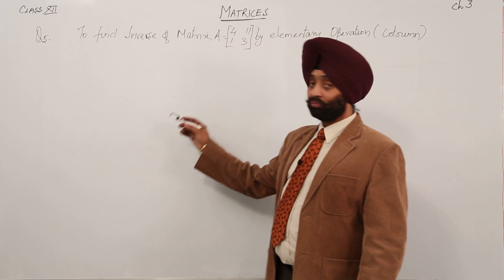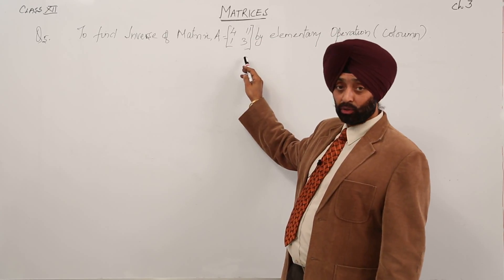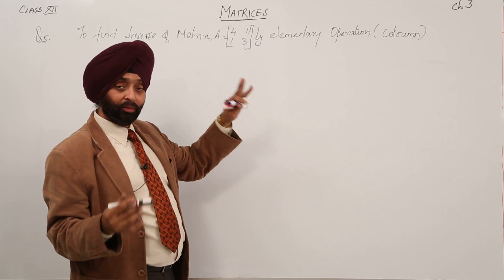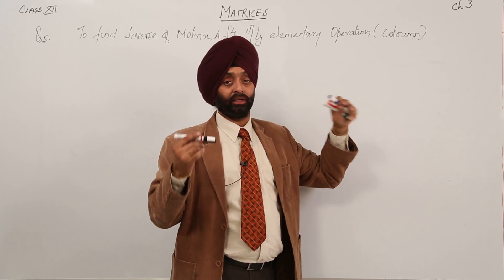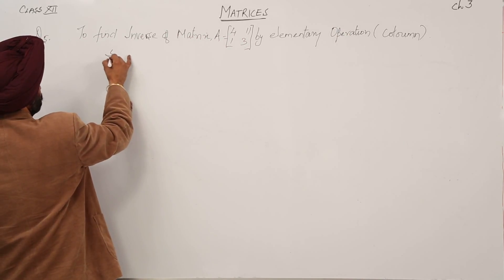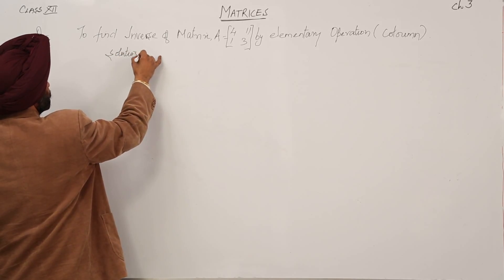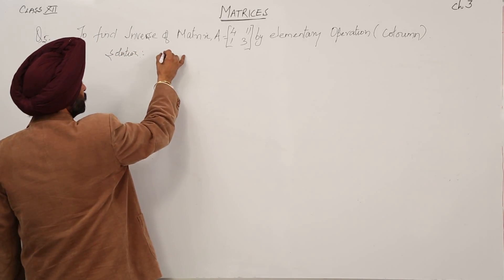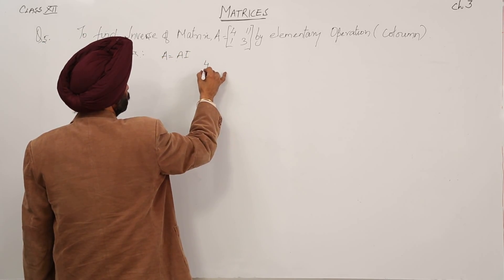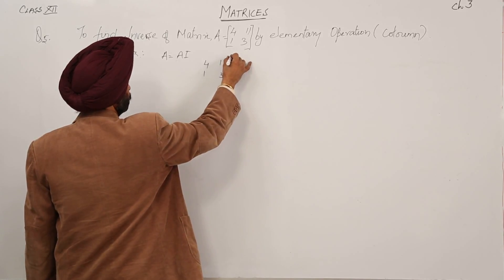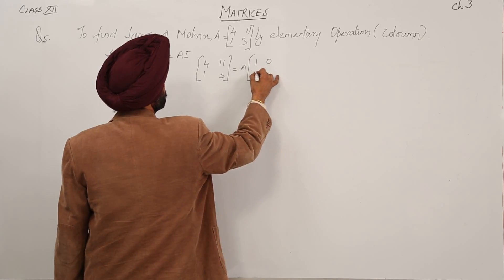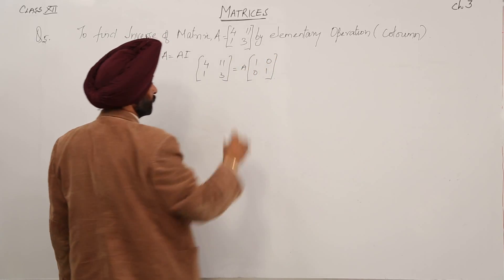Now, another question — we have to find the inverse of a 2×2 matrix by elementary operation. By any means we can do it, but I have mentioned from my side using the column operation. Before starting the steps, we write A = AI, so we have the matrix [4, 1; 11, 3] equal to A times the identity matrix [1, 0; 0, 1].